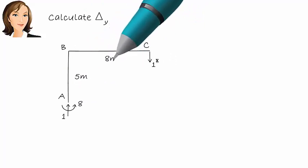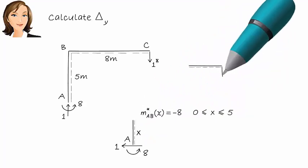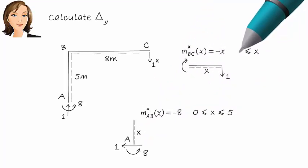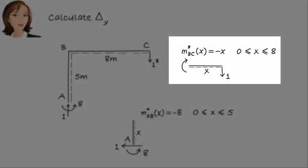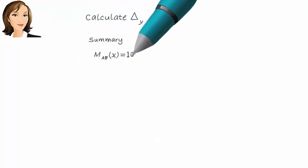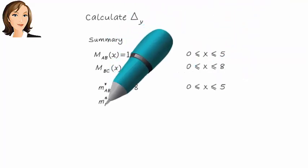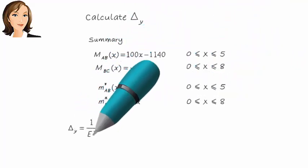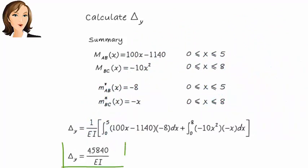Since we have already calculated bending moment equations due to the real loads, we just need to write moment equations due to the virtual unit load. Here is M star for member AB, and here is M star for BC. Here is M star for member BC. When we integrate M times M star, we get delta y. We have four more displacements to calculate.